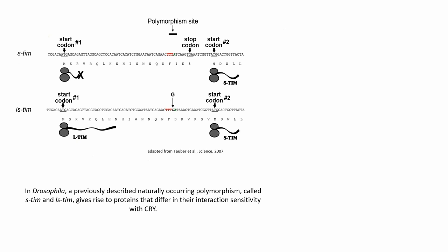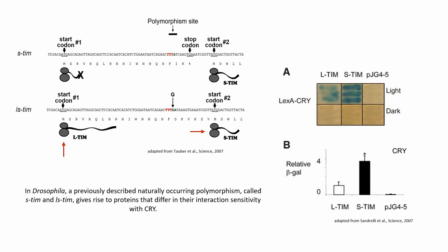In Drosophila, a previously described naturally occurring polymorphism called s-tim and l-s-tim gives rise to proteins that differ in their interaction sensitivity with Cryptochrome.